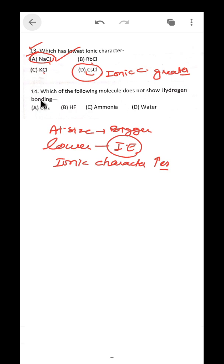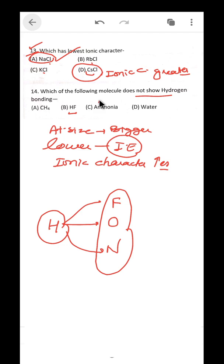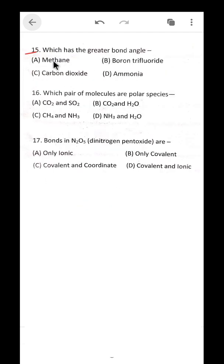Question 14: which of the following molecules does not show hydrogen bonding? Hydrogen bonding is a special bond where hydrogen bonds with the most electronegative elements — fluorine, oxygen, and nitrogen. HF has H–F, NH3 has H–N, and H2O has H–O — all show hydrogen bonding. CH4 has none of these electronegative elements bonded to hydrogen, so CH4 does not show hydrogen bonding.